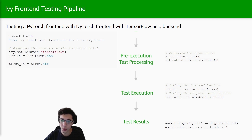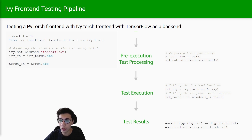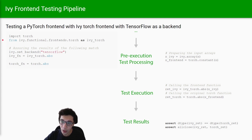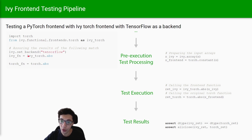In our frontends, we try to replicate the implementation of torch abs using Ivy. In this way, we can call the torch abs function using any backend we would like to use. We're going to assume we are using a bitorched frontend and also an Ivy torch frontend with TensorFlow as a backend. So you can see that we import the torch framework and we also import the torch frontend from Ivy, and we set the backend to be TensorFlow. In this way, we can actually call the Ivy torch frontend function using TensorFlow as a backend.